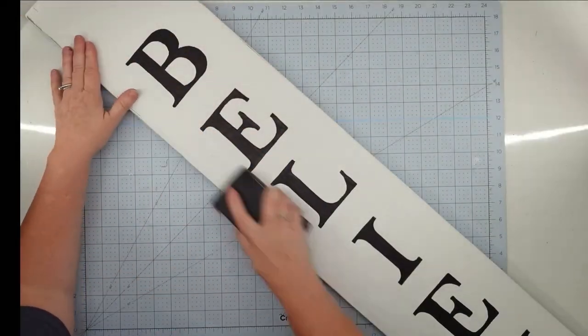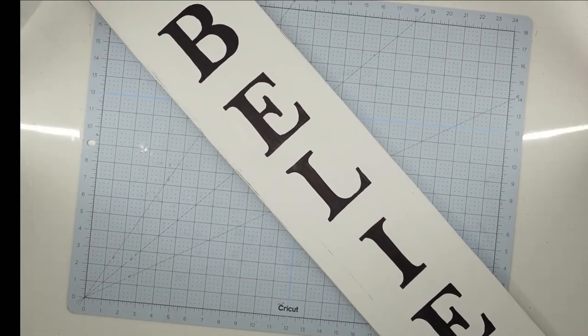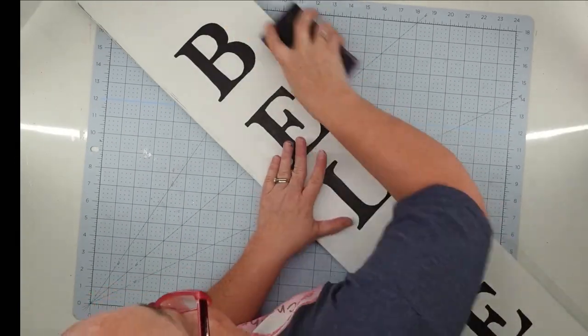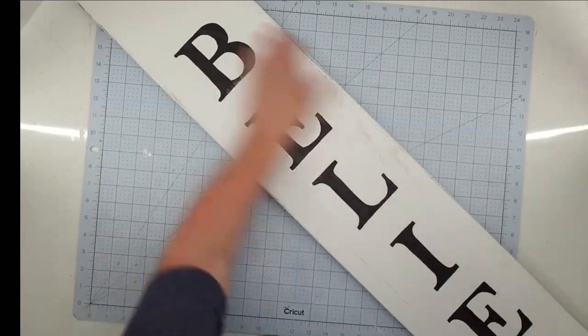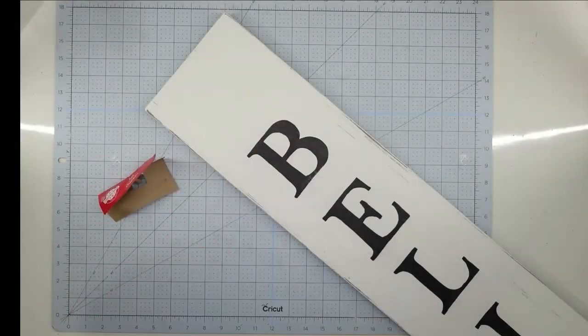Once I have all of my letters on my board I'm just going to take my sanding block and go over those edges and kind of rough it up and give it more of that farmhouse aged look. Y'all know that I really love that look but this is preference.